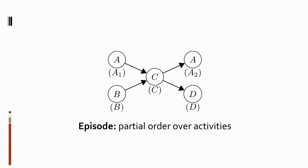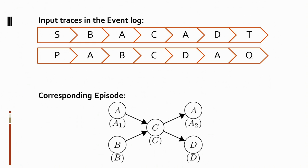So, what is an episode? An episode is a partial order over activities. We denote activities as nodes in a graph and depict the partial order between activities with edges. In this example, activity C only occurs after activities A and B have occurred. After C, another activity A and D occurs.